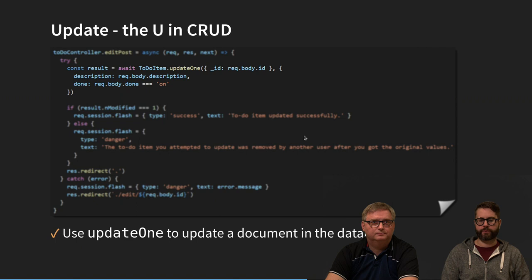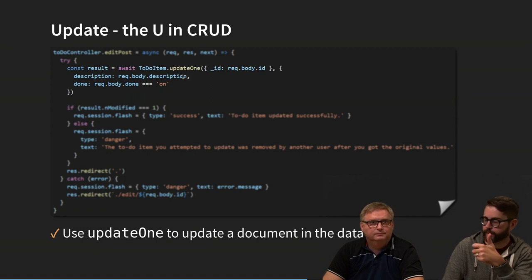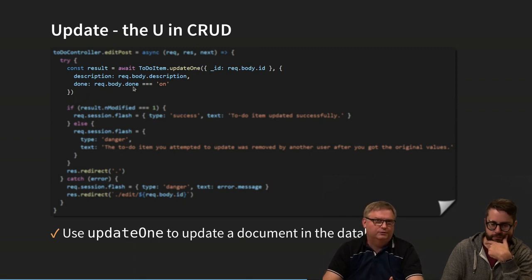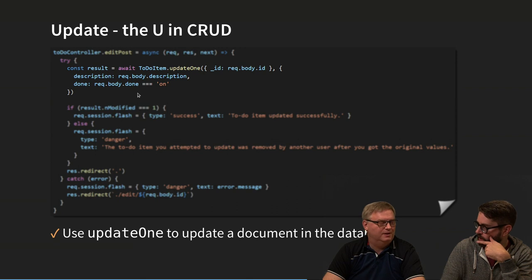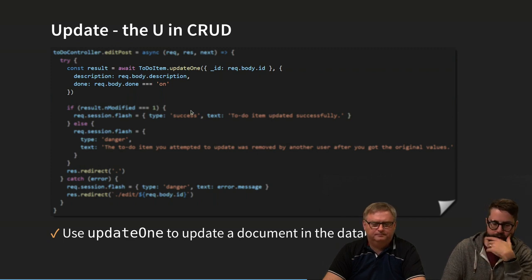For Update, we need to post to the controller. In the controller we prepare the data — we want a boolean true or false for the 'done' field rather than a string from the form, so we convert it. Then we call updateOne, which is also async so we await the promise.